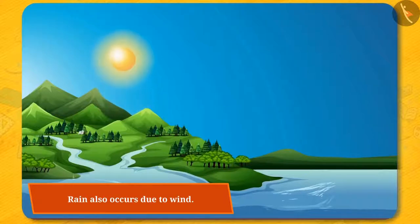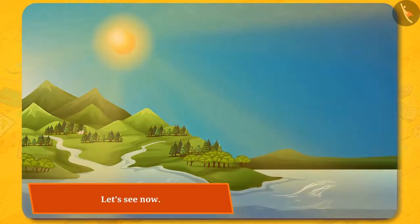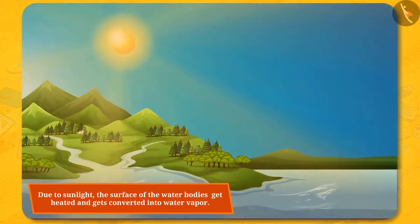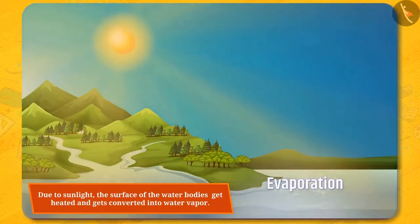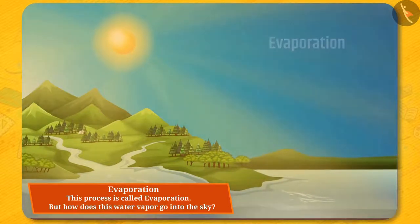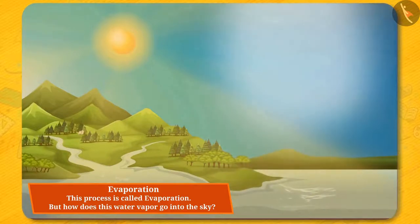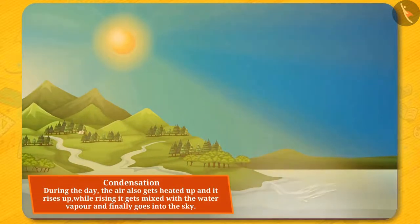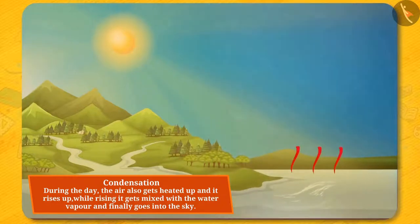Friends, do you know rain also occurs due to wind? Let's see. Due to sunlight, the surface of water bodies gets heated and turns into water vapor. This process is called evaporation. Due to sunlight during the day, the air also gets heated up and it rises up, and while rising, it gets mixed with the water vapor and finally goes into the sky.